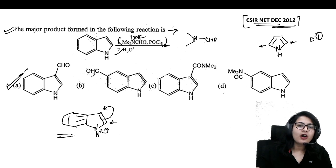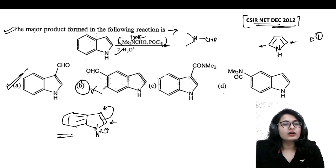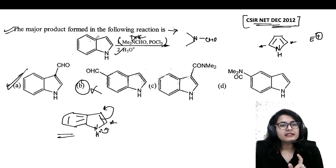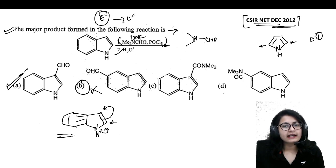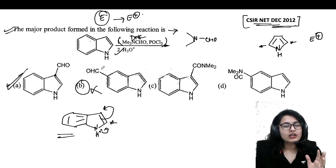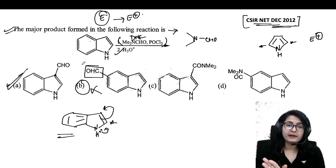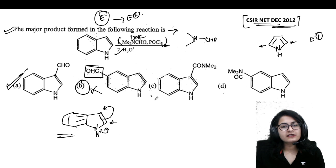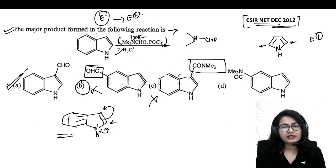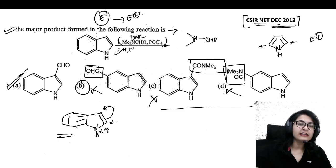Option A is your correct answer. Option B is absolutely wrong because the more electron-rich ring is the five-membered ring, and electrophilic substitution will first take place there. Option C is wrong because no amide forms — that product is completely absurd. Option D is also wrong for the same reason — forming an amide is completely wrong. A and B test regioselectivity, and A is the correct choice.